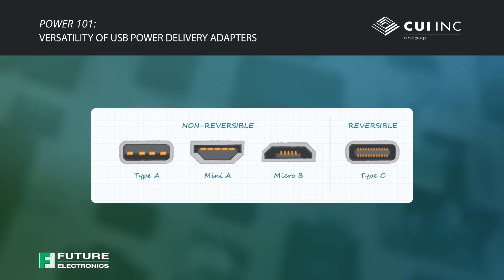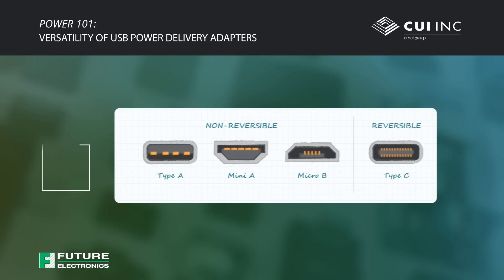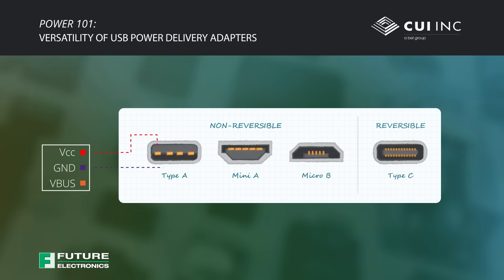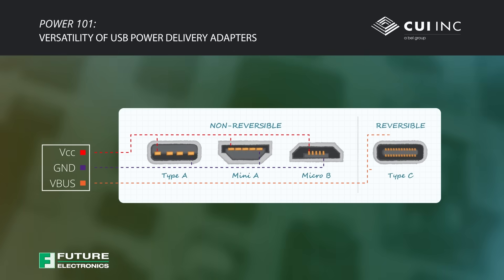USB has lived up to being the universal serial bus, even as it's evolved over the years. One of the benefits of USB is the power it provides to devices, and just as data rates have gone up, so too have power levels.